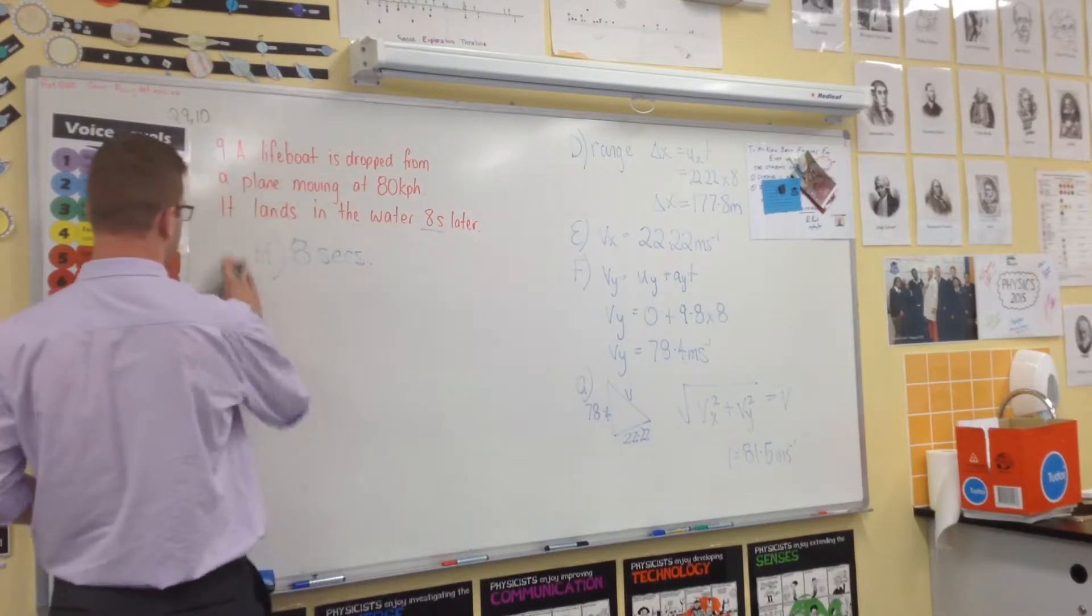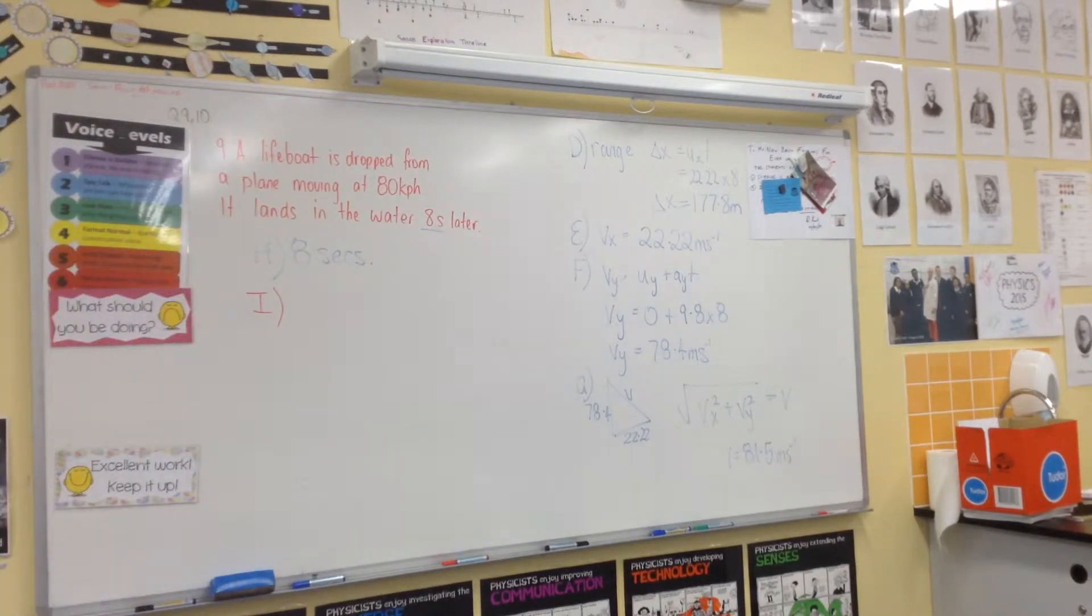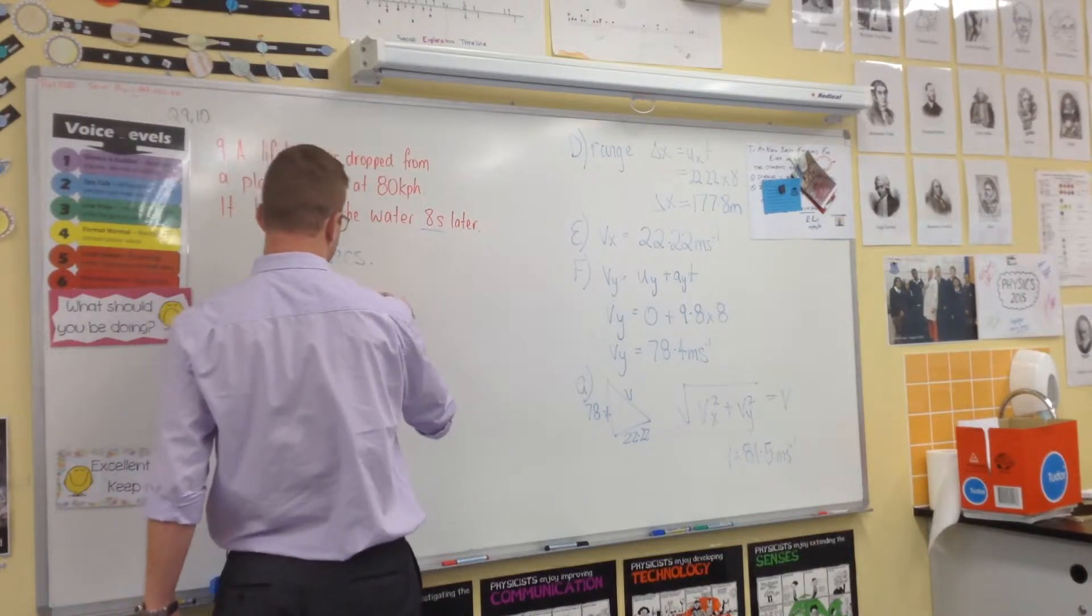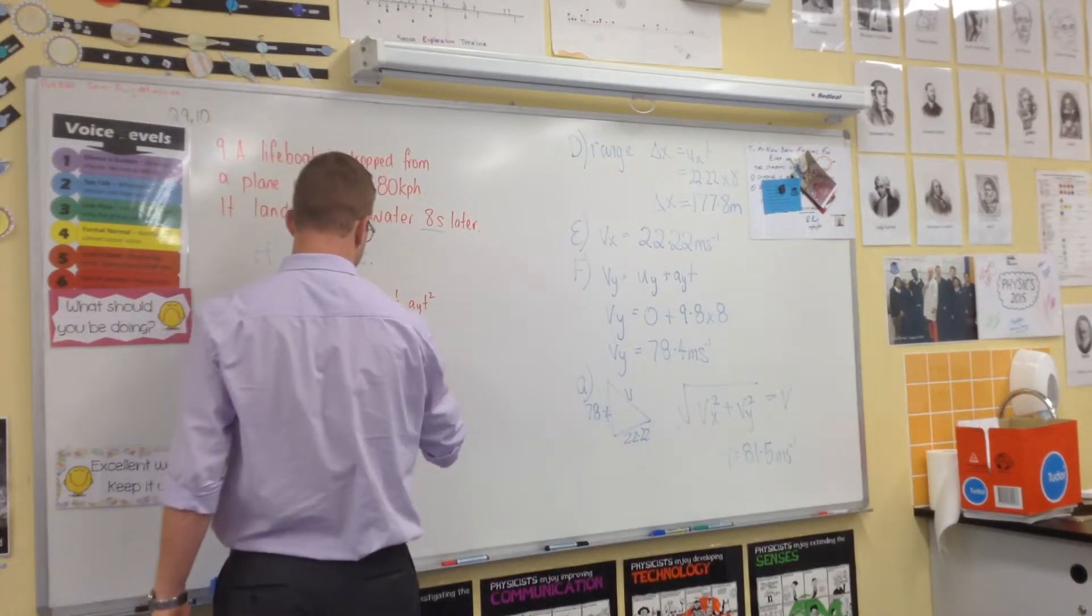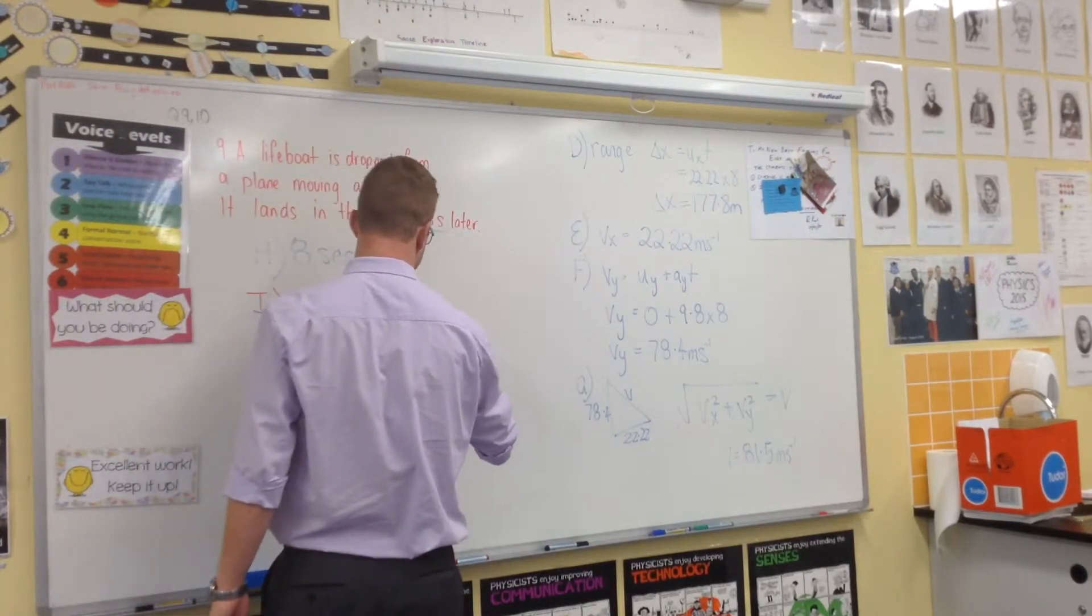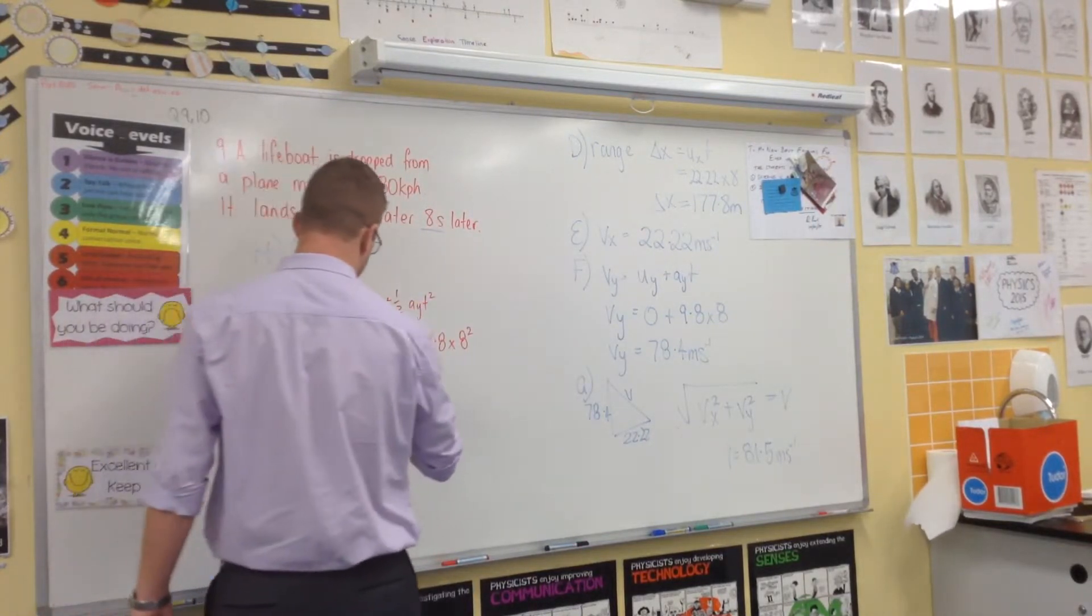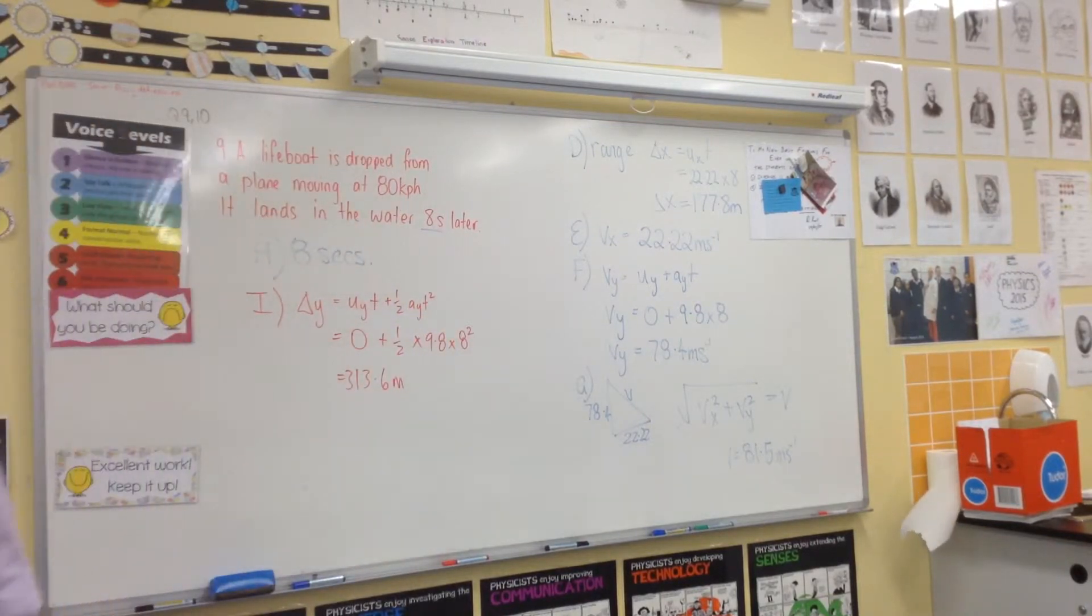I'll just take a color now. I is asking us the height from which it's thrown from. So let's do this. Delta Y equals UYT plus half AYT squared. 0 plus half times 9.8 times how long it's been flying for. And we've got 313 meters for its height. So that's for I.